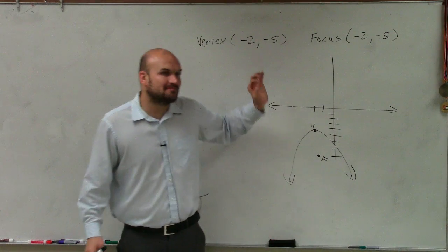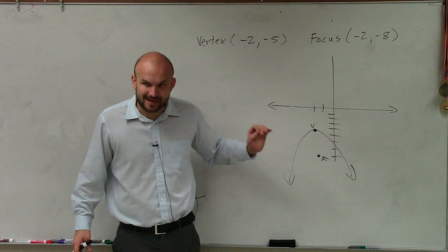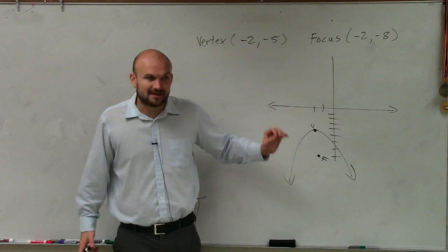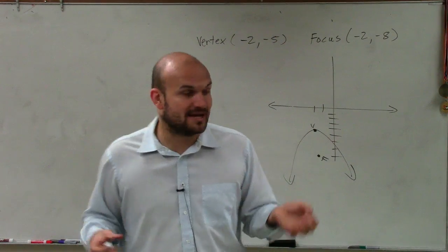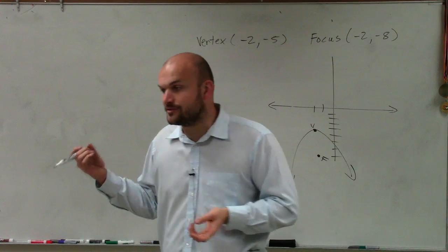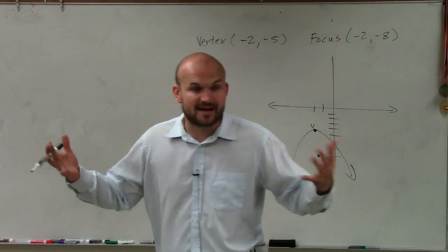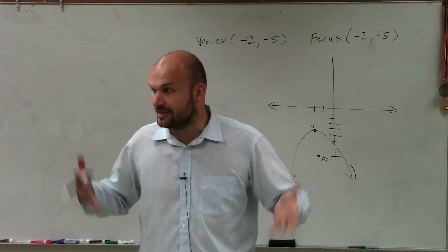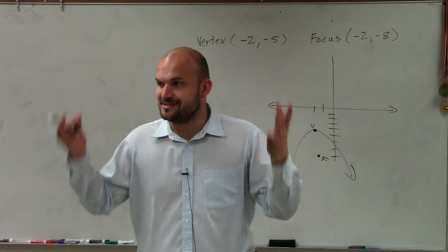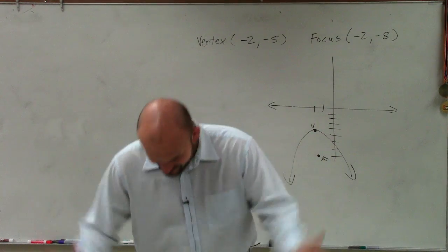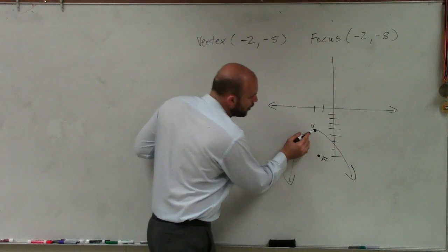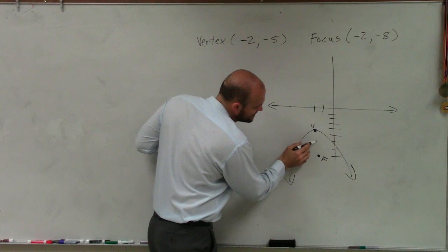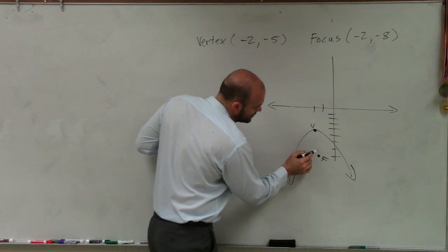So the next and most crucial part of information, which I said, you have to make sure you guys know when you leave, is that once I know what the vertex is and the focus, I can now find the value of p, which is the distance between vertex and the focus. So let's count. Negative 5, negative 6, negative 7, negative 8. So 1, 2, 3.